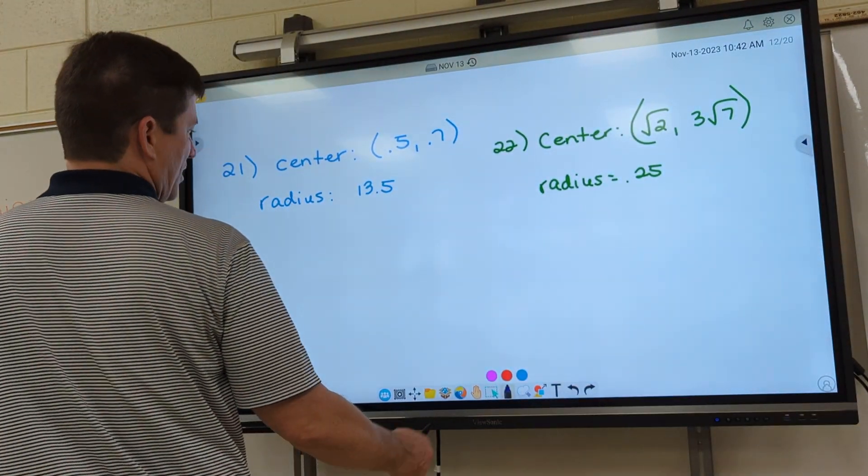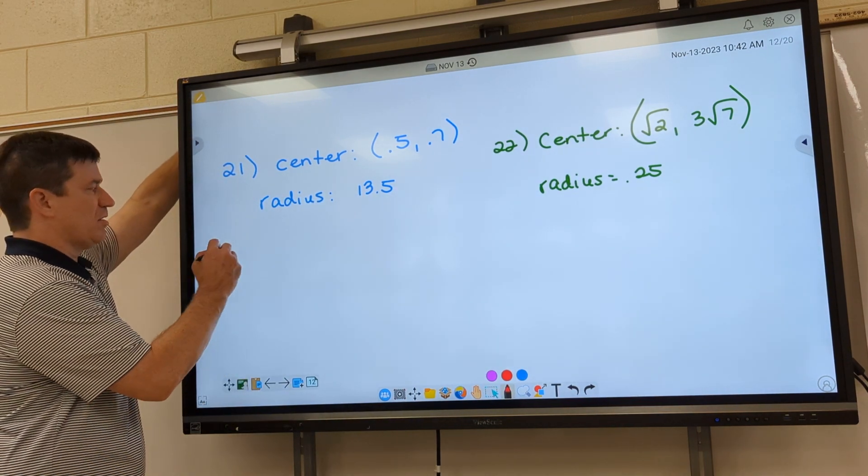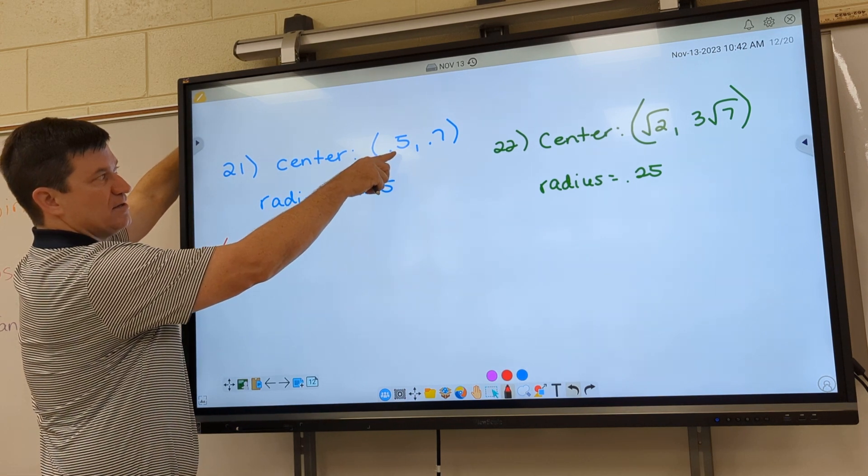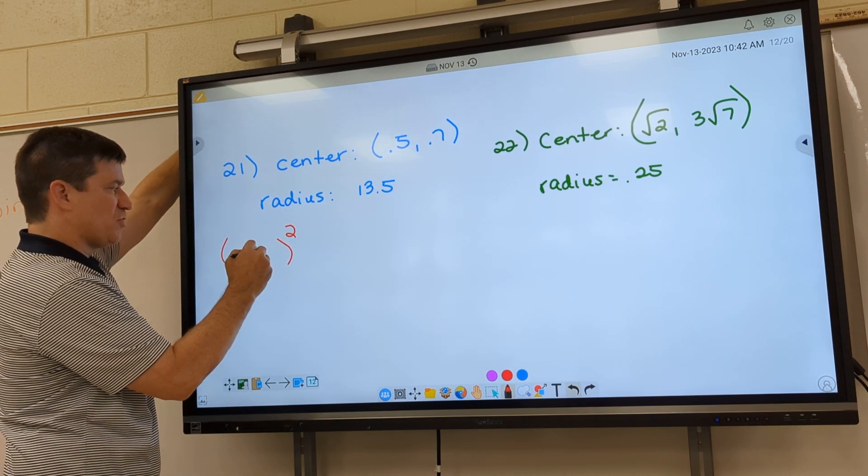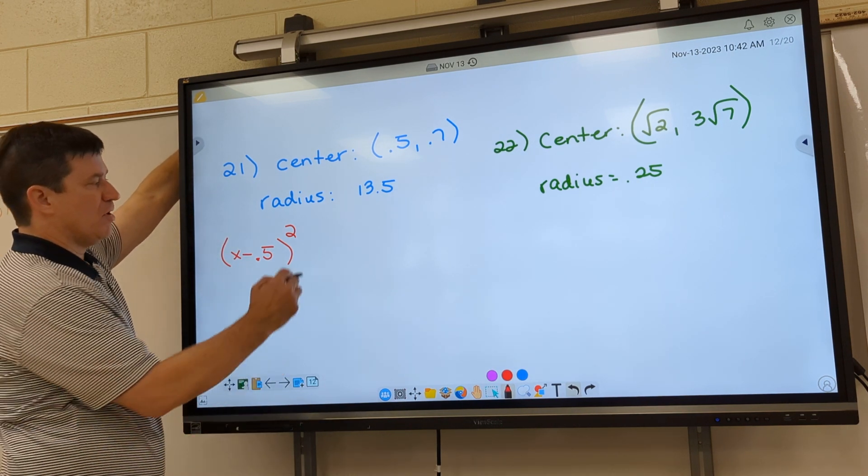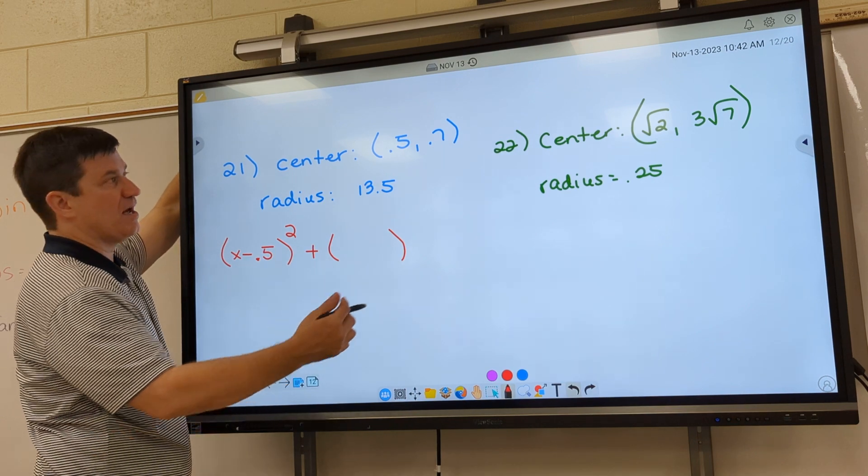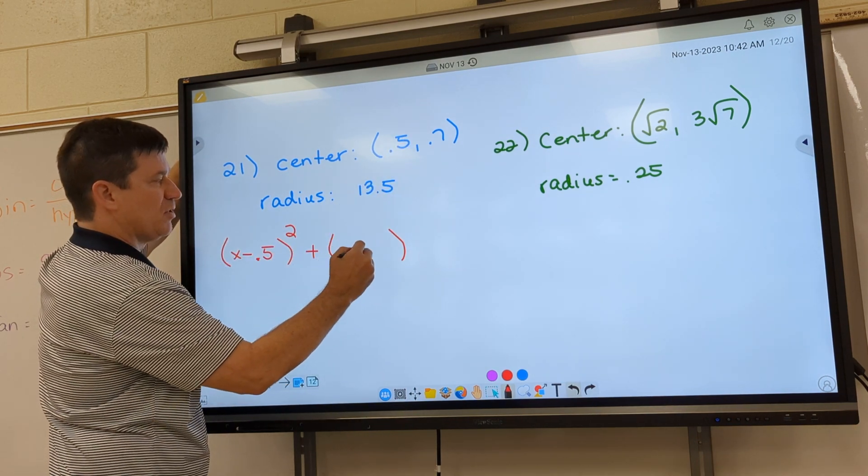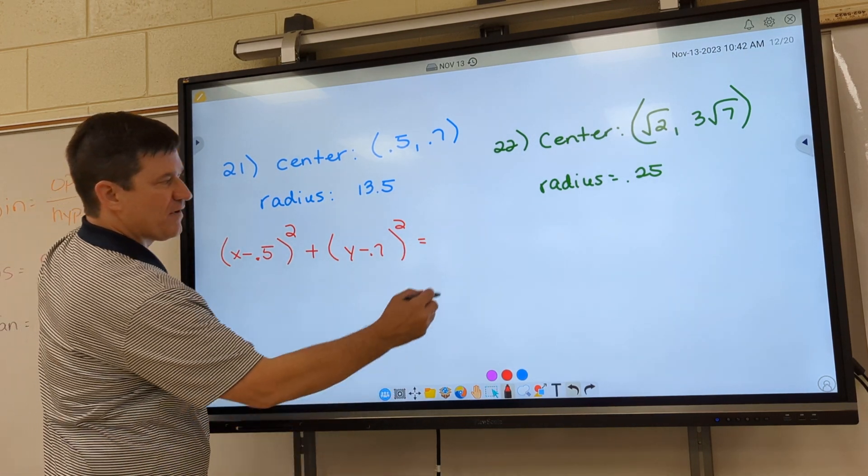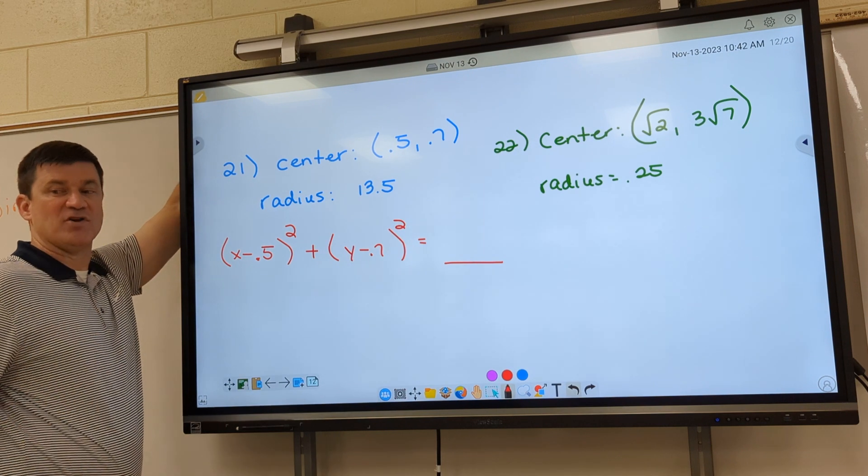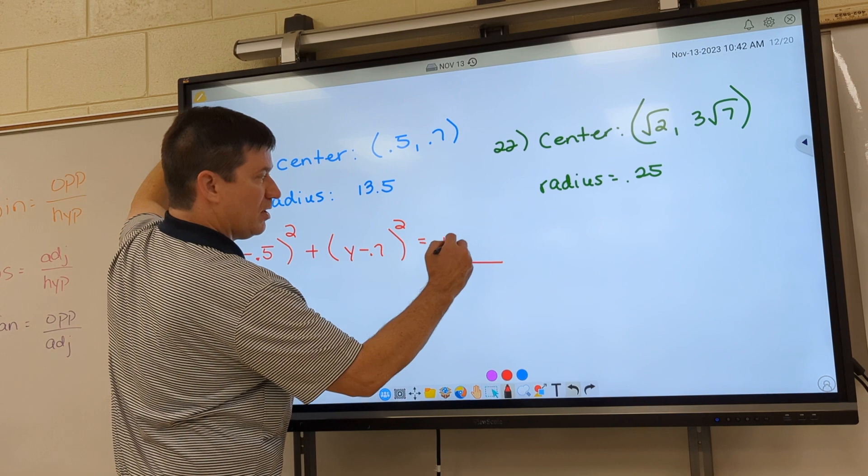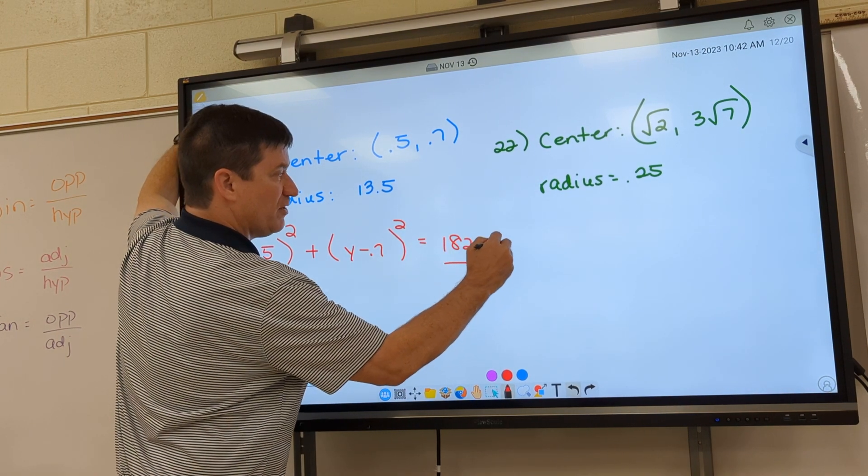All right, looking at 21 and 22. Samara, try to help me on 21. What's going to go in the first parenthesis? All you do is flip your sign. So it'll be x minus 0.5 squared. That was easy. All right, what goes in the second parenthesis? Again, just flip your sign. y minus 0.7 squared equals. Now, how do we find the number that goes right here? We square that number. I have no idea what that's going to be. That's going to be 182.25. 182.25. Yes, sir.